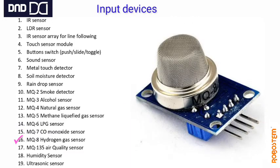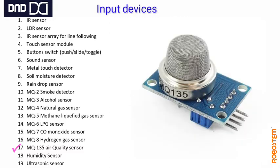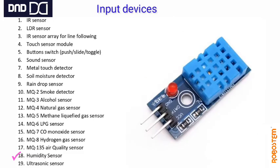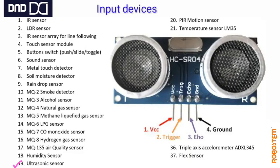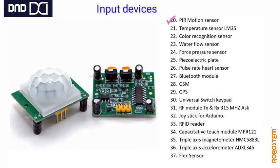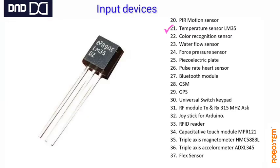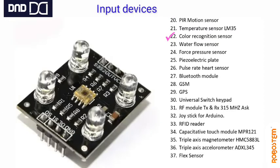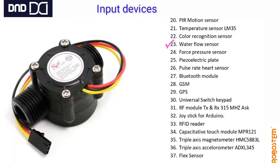MQ 8 is the hydrogen sensor. MQ 135 is the air quality sensor. Next is the humidity sensor, which senses humidity in the area. Ultrasonic sensor detects objects within 4 meters. PIR motion sensor detects motion.